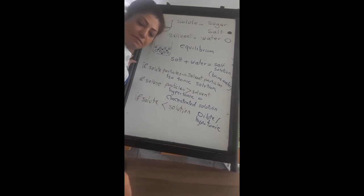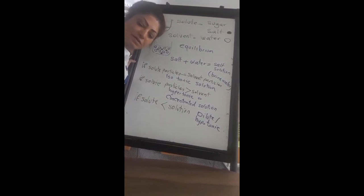We need to know these solution types because after that we need to talk about osmosis and diffusion and the reaction of different types of cells when you place them inside each of these solutions. Also, temperature has an effect on dissolving things. The higher the temperature, the faster the solute particles can dissolve into the solvent. The lower the temperature, of course, the more slowly it distributes into the solvent to make a solution.